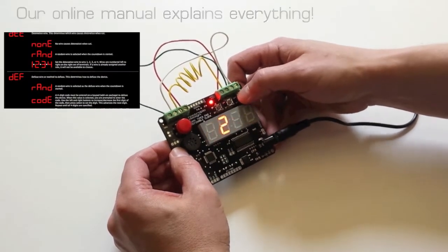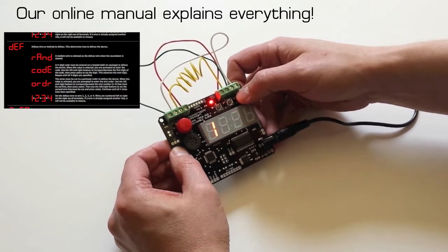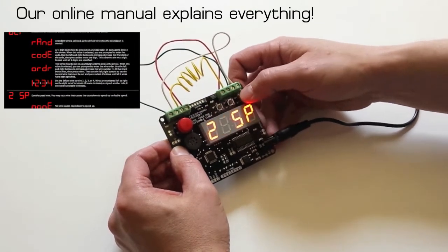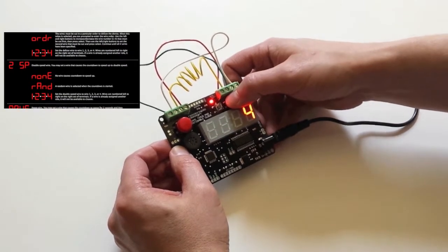You get to configure which wire defuses it and which wire causes immediate detonation. You can also make a wire cause the countdown to speed up or to pause for a few seconds. You can even require that the wires be cut in a particular order.